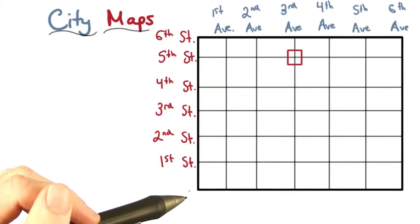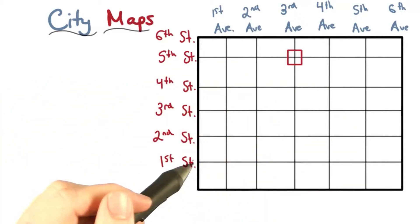Here's a different city map. And in this city, the naming starts here. We have 1st Street, 2nd Street, and then it continues.